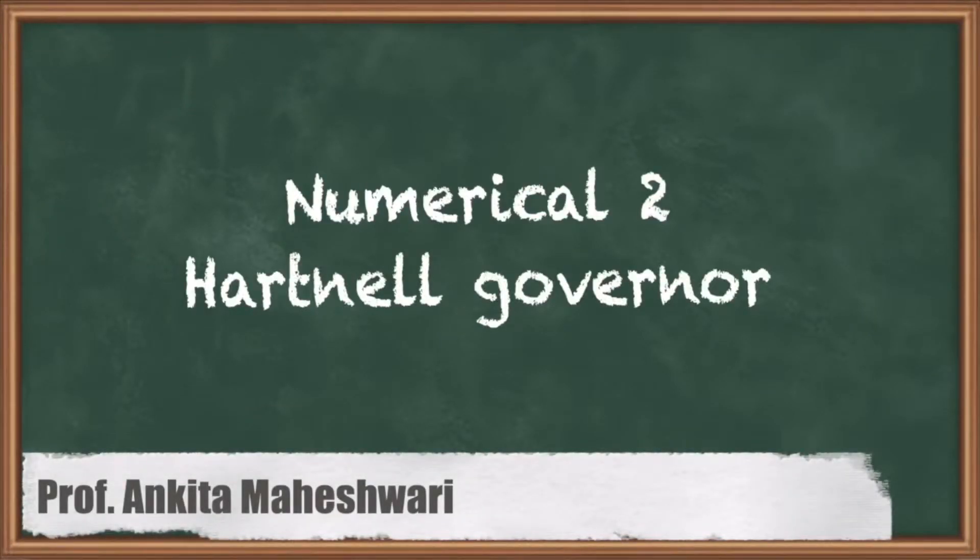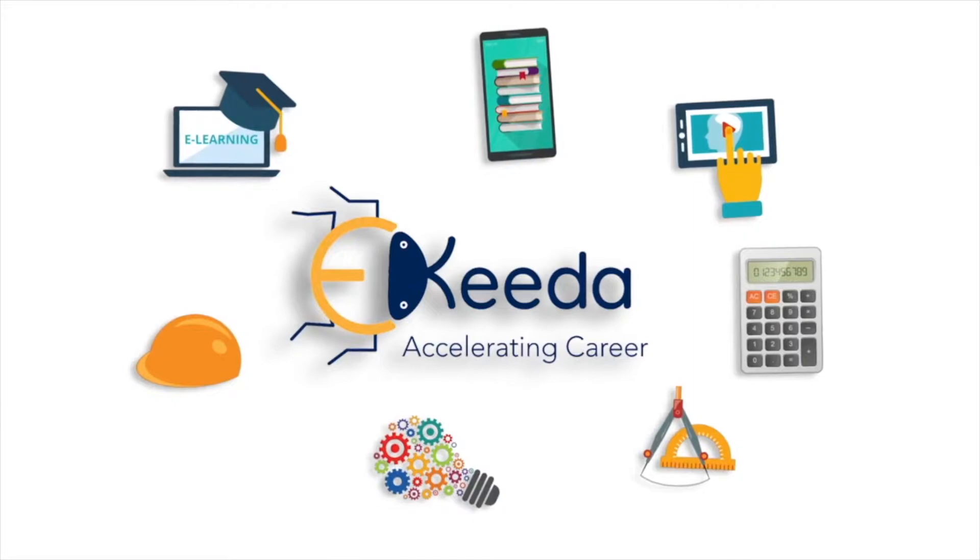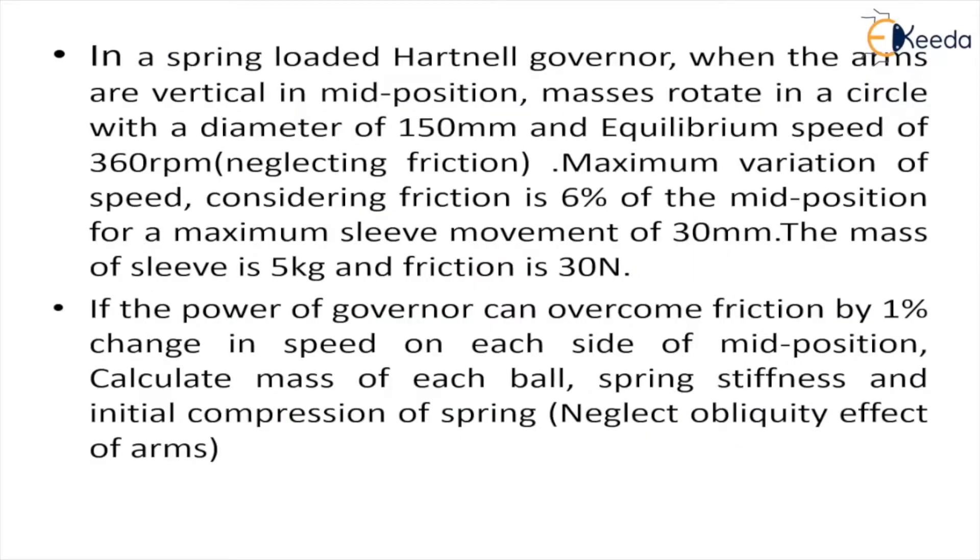Hello everyone, in this video we will discuss a numerical on Hartnell Governor. In Hartnell Governor when the arms are in vertical mid position, the masses or balls rotate in a circle of diameter 150mm. Equilibrium speed is given which is 360 rpm, and in this case they are neglecting friction. The maximum variation of speed considering friction is 6% of the mid position for maximum sleeve movement of 30mm.